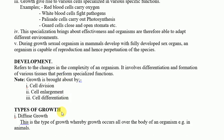In the next session, we will discuss the concept of development. Development refers to the changes in complexity of an organism, from simple to complex. It involves the differentiation and formation of various tissues that perform specialized functions. Growth actually involves three processes: cell division, cell enlargement, and cell differentiation. Cell division is when one cell divides to form two, and those two divide again to form four, and so on. Cell enlargement occurs because the resulting daughter cells are small in size and must enlarge. Cell differentiation is the changing of cells from a similar structure and composition into more specialized forms to perform a specific function.